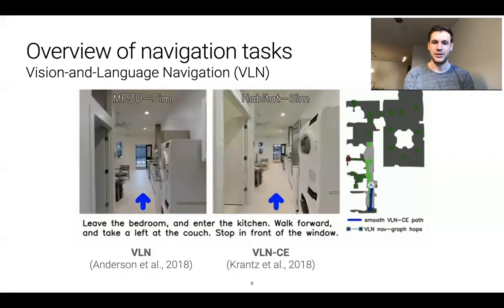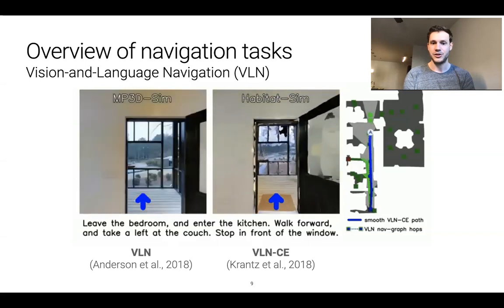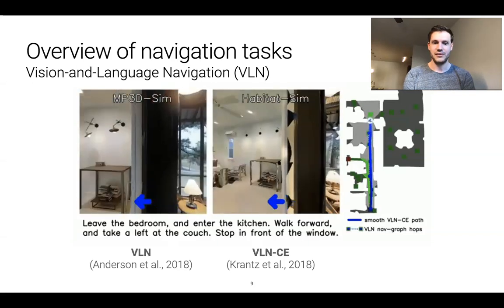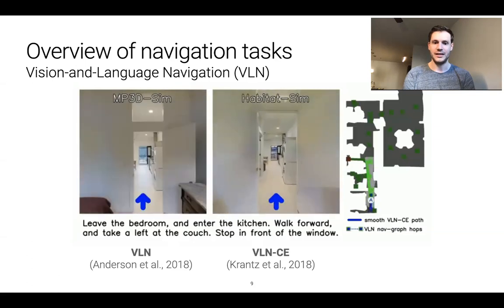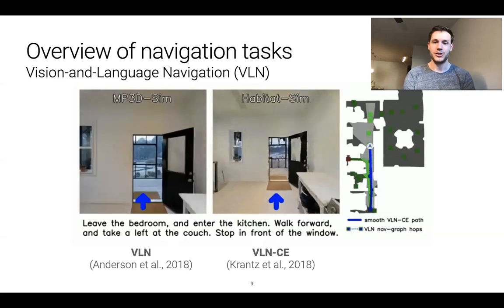Then we have vision and language navigation which is grounded instruction following. In this task the agent is given an instruction in natural language such as leave the bedroom and enter the kitchen, walk forward and take a left at the couch, stop in front of the window. The agent then must follow this instruction to reach the goal.